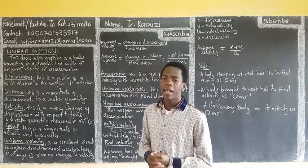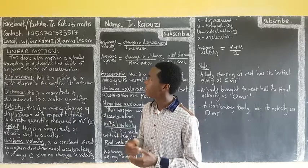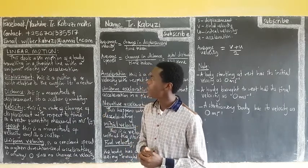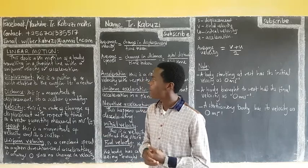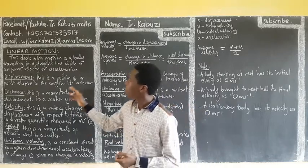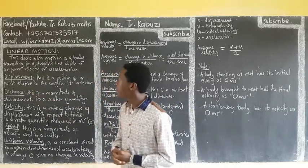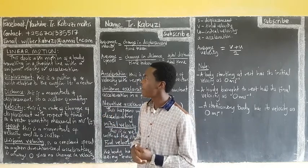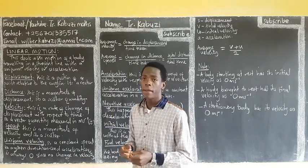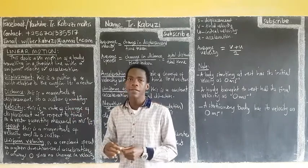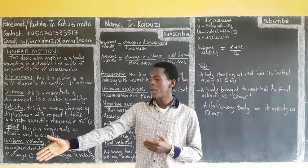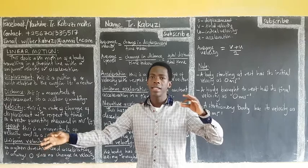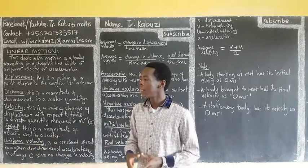We are going to see common terms that are going to be used in linear motion. One is displacement. This is the position of a point relative to the origin, and it is a vector. So, if this is the origin and the point is here, that is what we call displacement relative to the origin.